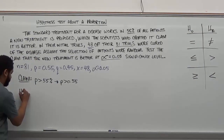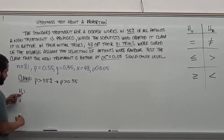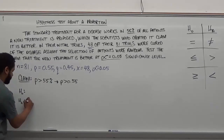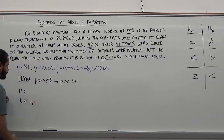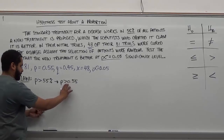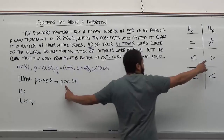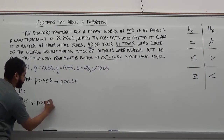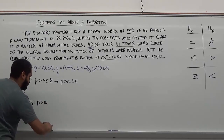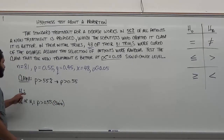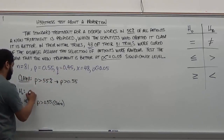Our first step is to identify the null hypothesis H₀ and the alternative hypothesis Hₐ. Since our claim uses a greater than symbol, the alternative hypothesis is Hₐ: p > 0.55 — and we mark this as the claim. The counterargument gives us the null hypothesis H₀: p ≤ 0.55.